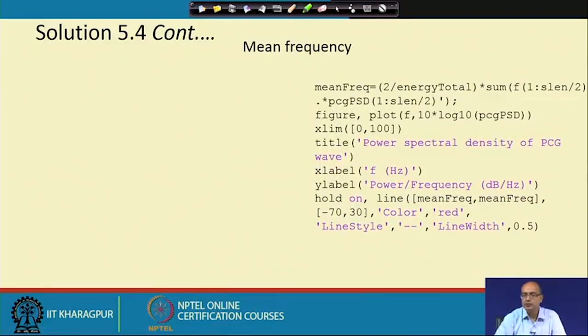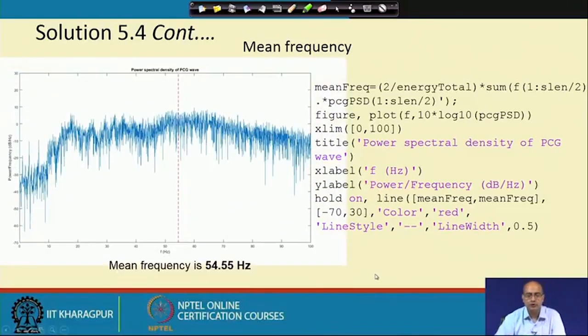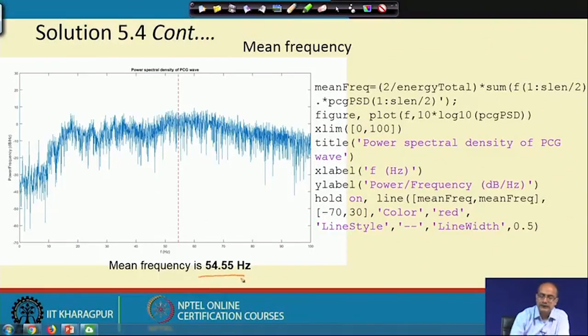We go for the next task—we need to find out the mean frequency, and we know the formula we have used earlier. We compute the mean frequency and show the plot of it. The mean frequency is at 54.55 hertz. Please keep in mind, we have the spectrum 0 to 500, and we have taken only the small part of our signal of interest, looking up to 100 here. Compared to the 500 hertz span, the mean frequency is pretty low—about one-tenth, we can say.